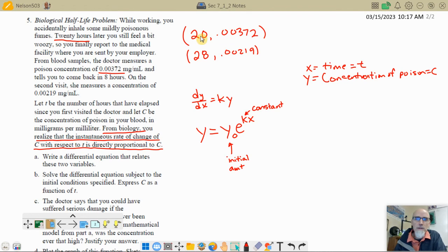Okay, since we don't have a time 0, this is a little awkward. So what I'm going to do is make it so that time 20, when the person first goes in, is our time 0. So 0, 0.00372, and then we're going to have this one, 28, be 8, 8, 0.00219, okay?